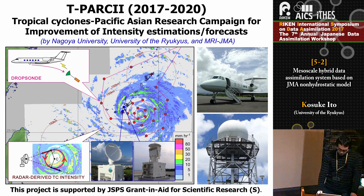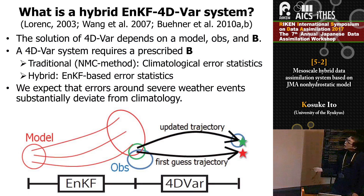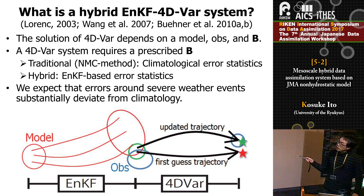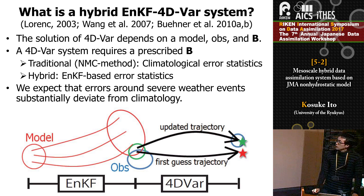Let me discuss about the hybrid ENKF 4DVar system. The 4DVar system depends on the numerical model itself, observations, and background error covariance. Traditionally, it was constructed based on climatological error statistics. Recently, the hybrid method uses ENKF-based error statistics. We expect that errors around severe weather events substantially deviate from climatology, so the hybrid system can gain benefit for severe weather event forecasting.